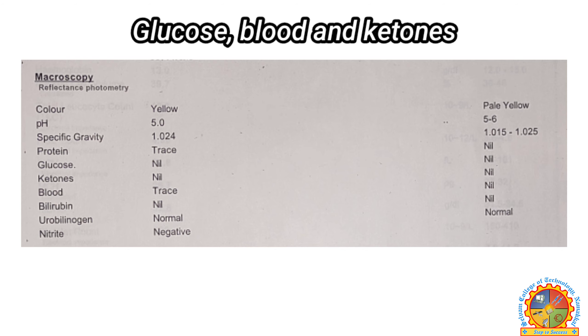Similarly, glucose, ketones, and blood are not usually found in urine samples. If there are some traces of them at a higher level, it indicates health problems.